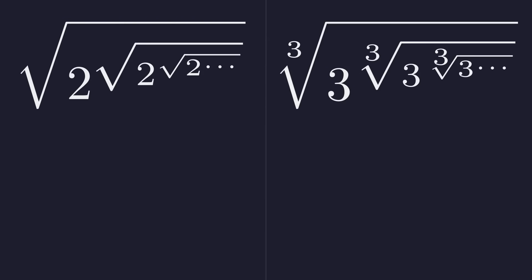Welcome back to Mental Math. We are presented with two almost identical infinite expressions. On the left, an infinite tower of square roots of 2. On the right, an infinite tower of cube roots of 3.